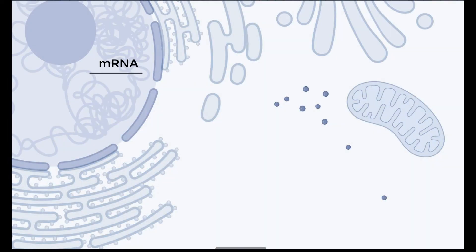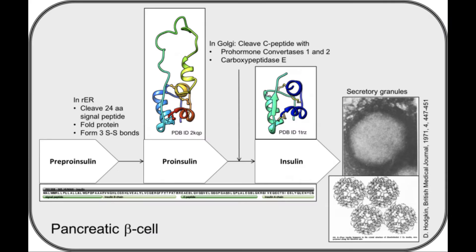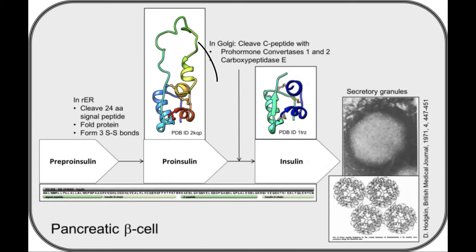The signal peptide directs the mature mRNA to ribosomes on the rough endoplasmic reticulum for translation. As the translated protein is pushed into the lumen of the ER, the signal peptide is cleaved off by a signal peptidase. The rest of the protein, or pro-insulin, folds up to form specific secondary structural elements at its two ends, leaving a long floppy loop in the middle.